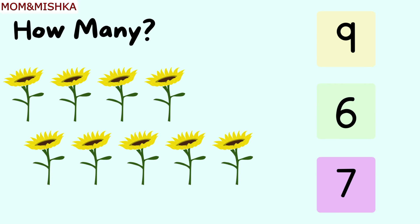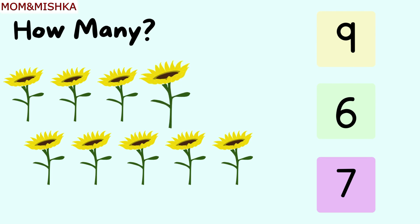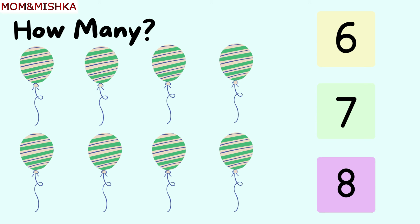How many flowers? One, two, three, four, five, six, seven, eight, nine. There are nine flowers. Next.